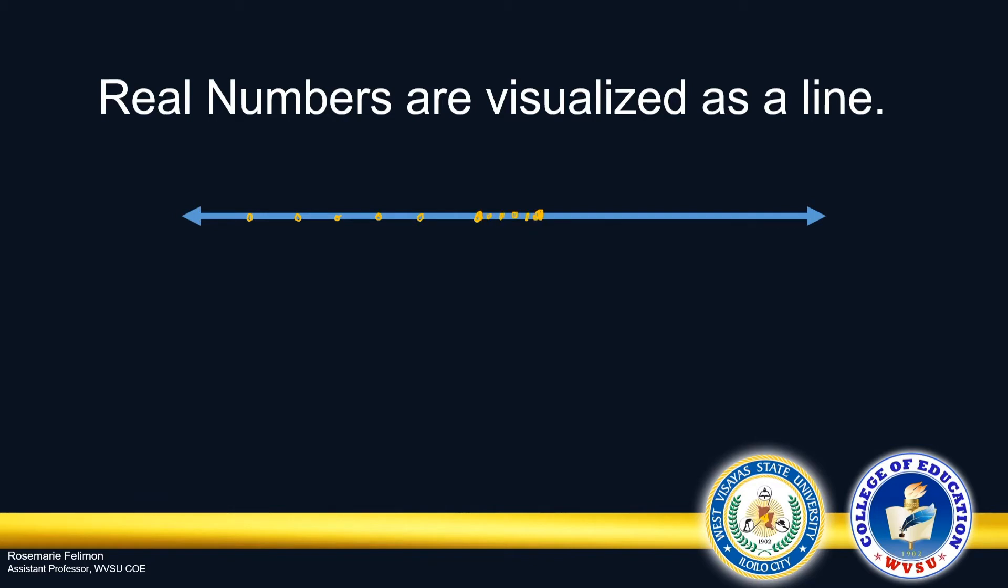If we have two points on the line, we are sure that there are infinitely many points in between these two points. In the same manner that if we identify two real numbers, there are infinitely many real numbers in between these two real numbers.